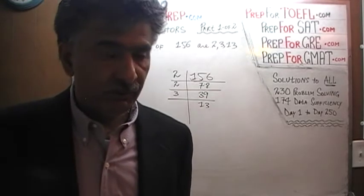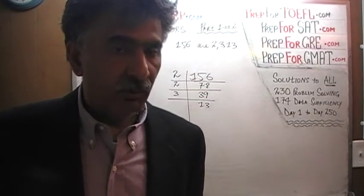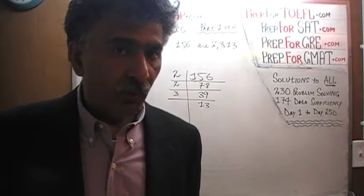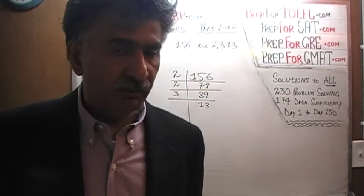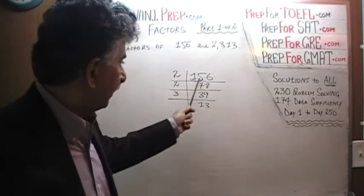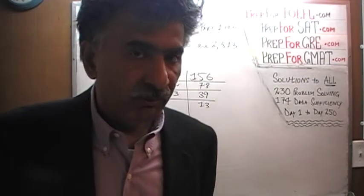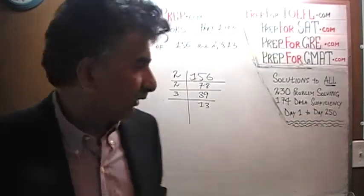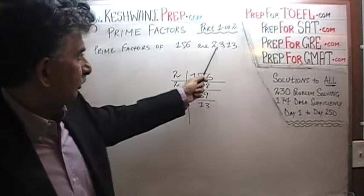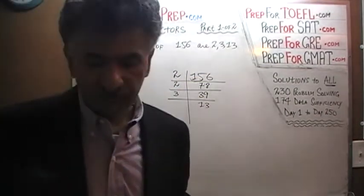156 is divisible by several numbers, but of all the factors — all the numbers that you can divide 156 by — there are only three that are prime numbers, and those numbers are 2, 3, and 13. Those are the prime factors.